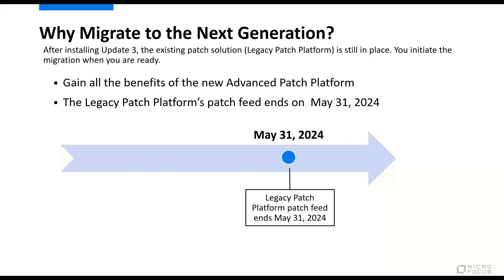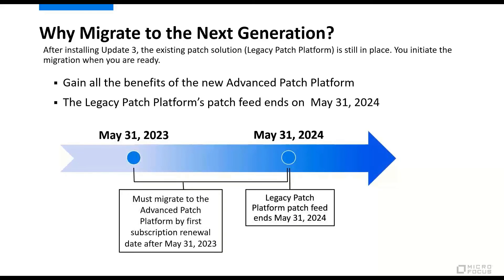There is another time-related factor you need to be aware of. June 1, 2023 to May 31, 2024 is a wind-down period for the legacy patch feed. This means that you must be migrated to the new advanced patch platform by your first patch subscription renewal date after May 31, 2023. For example, if your ZENworks patch management subscription renewal occurs on June 15, 2023, you need to be migrated and using the new advanced patch platform by that date. If your first renewal occurs on March 20, 2024, you need to be migrated by that time. Regardless of your renewal date, we encourage you to move to the new advanced patch platform as quickly as possible to experience the benefits of the new platform.